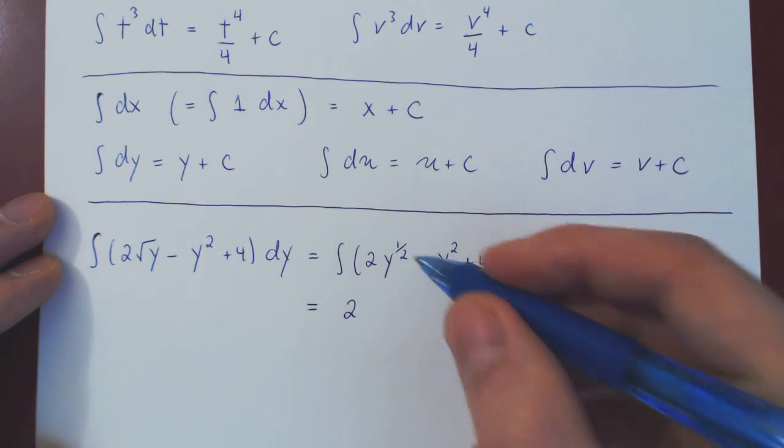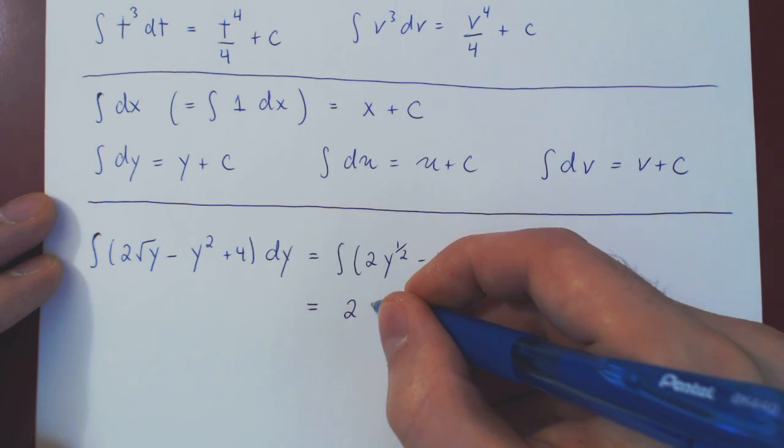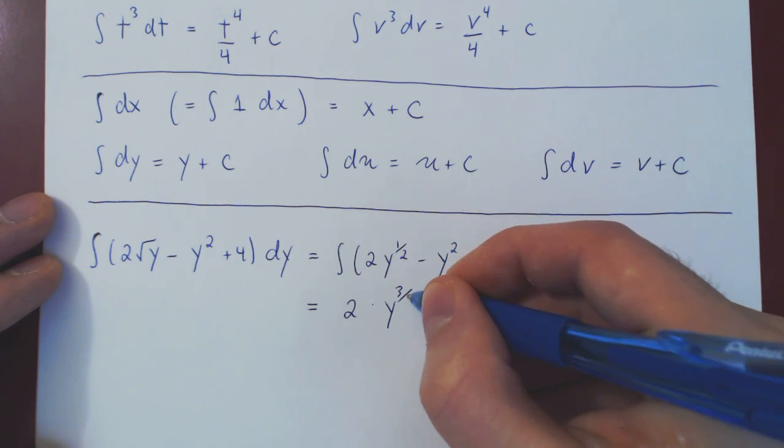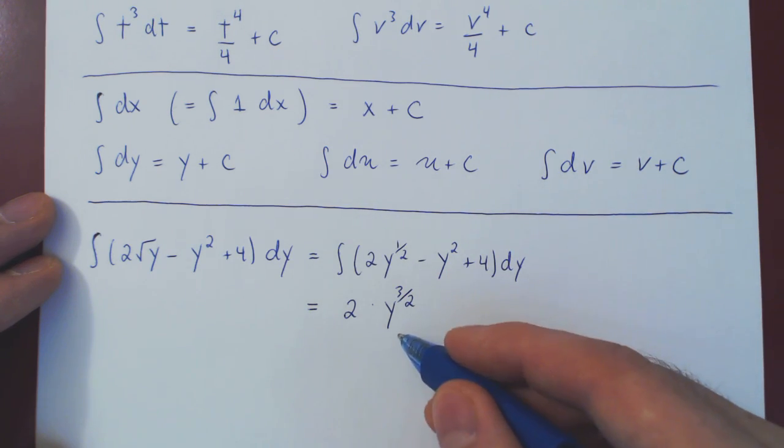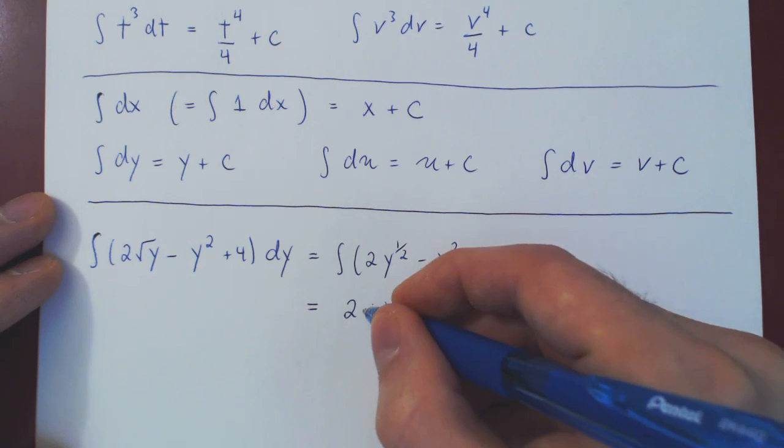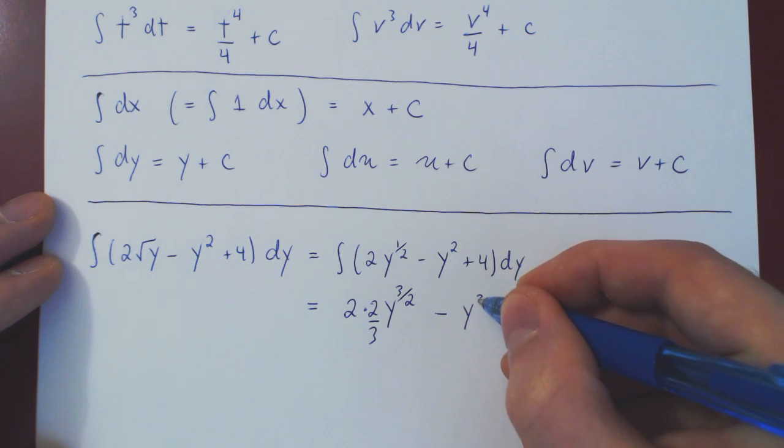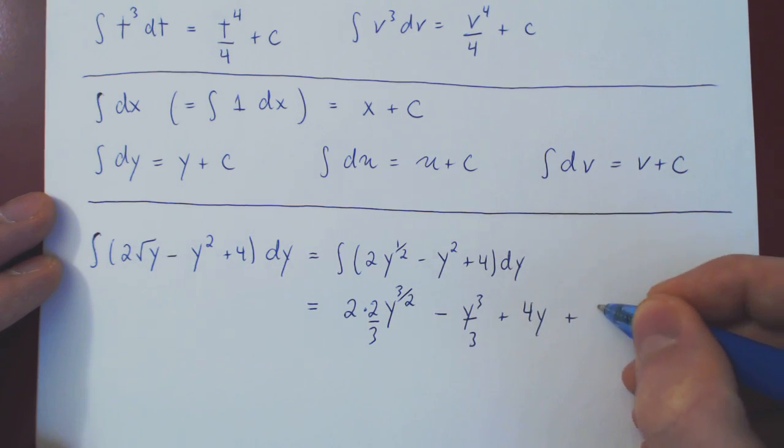2, we add to the exponent 1 half. 1, so 1 half plus 1 is 3 half. We divide by 3 half, but if you divide by 3 half, you multiply by 2 over 3, minus power rule y cubed over 3, plus, of course, 4y plus c.